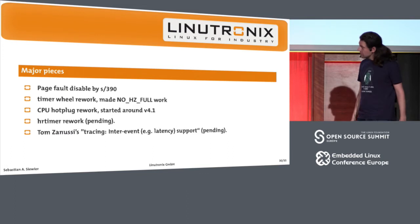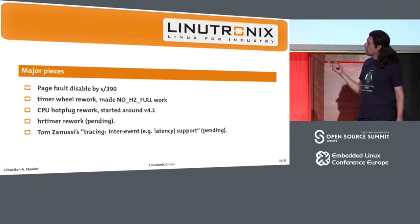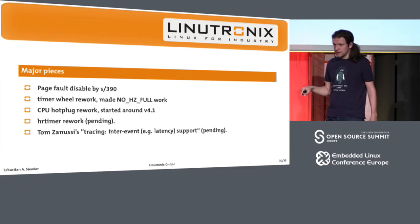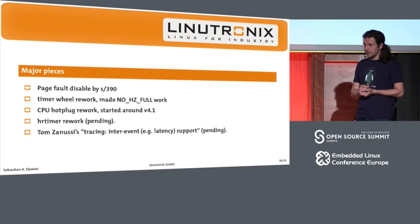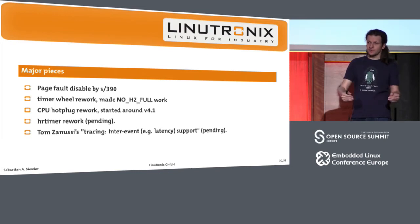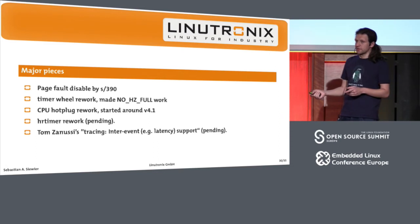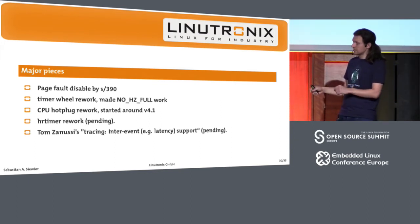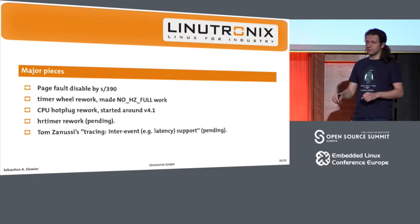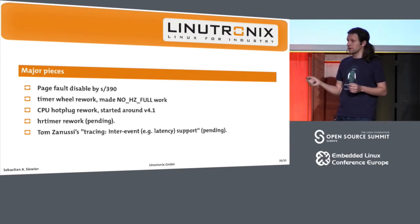What did we get merged? One thing that went in was the way we handled priority inheritance in our tree. We tried to sell it upstream but we didn't have a use case for it. A few years later, the S/390 people came along with a specific problem, and we looked at it and said our patch set would solve it. So what the S/390 people did is they took the patch set, refurbished it, and merged it upstream — and it carried all our fixes along with it. That was a nice thing to achieve.